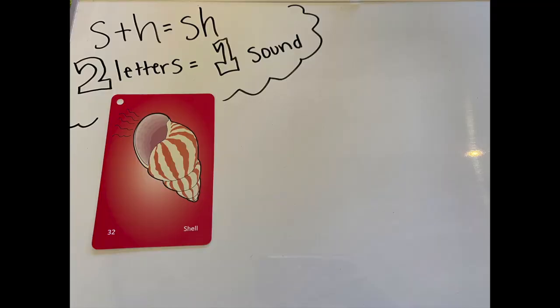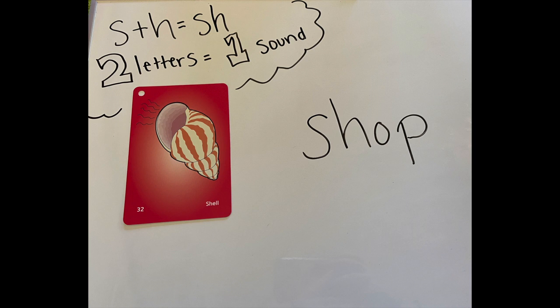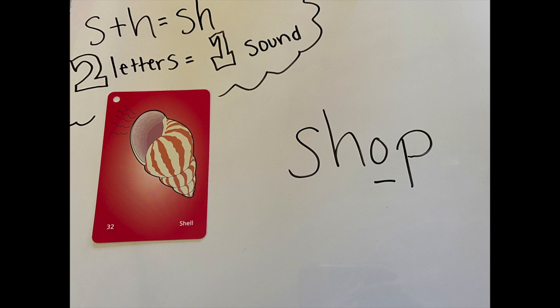All right, Kipsters, I think you're ready. Our first card is the shell card, so we are going to be focusing on the digraph sh. Somewhere in our word, we are going to see the sh pattern. Let's see what our first word is. I remember that the first thing I need to do is find the middle vowel. What do you think it is? You're right — it's O. My middle vowel is O.